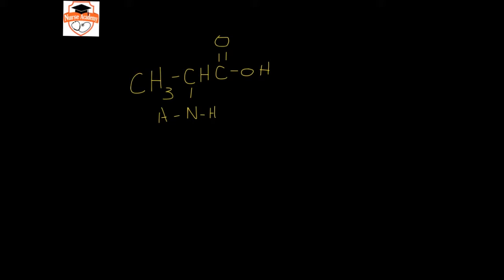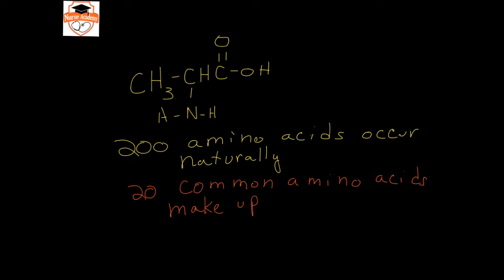In nature, there are about 200 amino acids that occur naturally, but most proteins are made of 20 common amino acids that make up all the proteins in the human body.